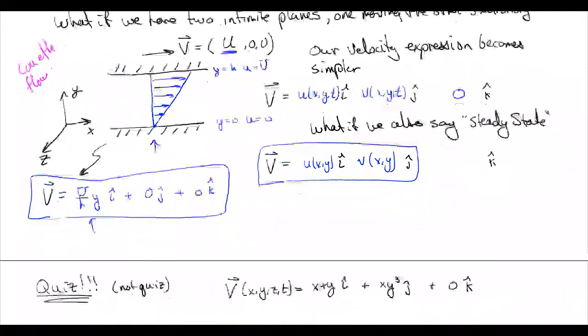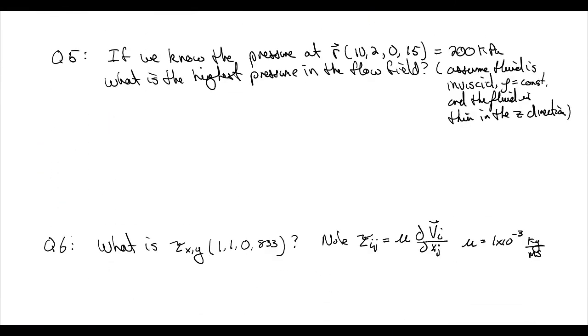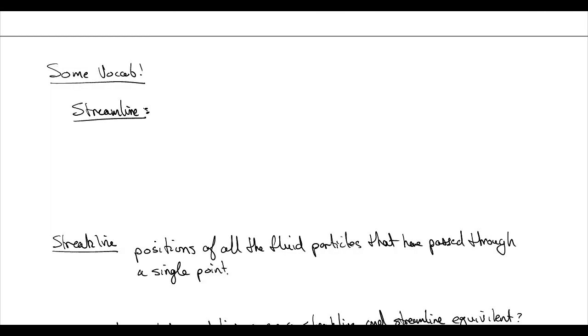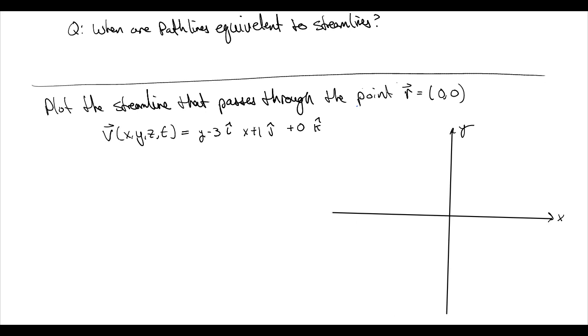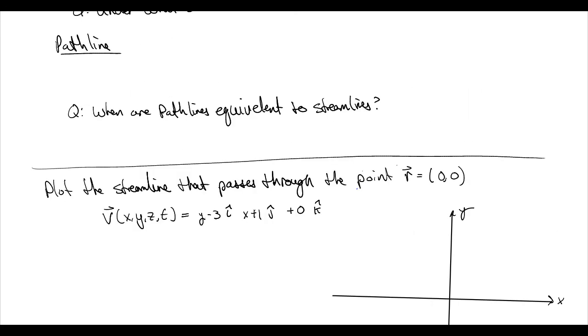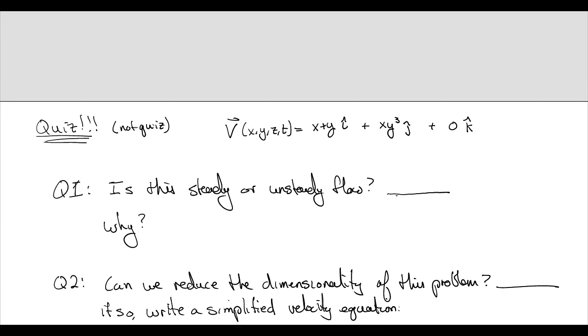Great, so we're going to skip over the quiz, we're going to do that in class, but our next lecture will briefly talk about some vocab, and then we will do a plot of streamline that passes through a point as a way of practicing our Eulerian point of view of velocities.